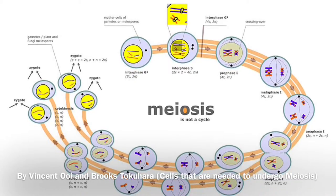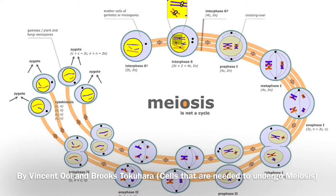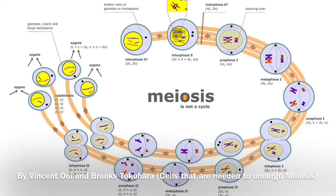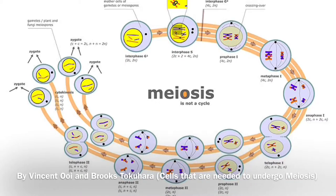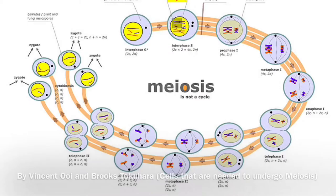Germline cells are the only cells that can undergo meiosis as well as mitosis. They undergo meiosis to produce haploid gametes to fuse to form a diploid embryo that eventually grows into an adult.